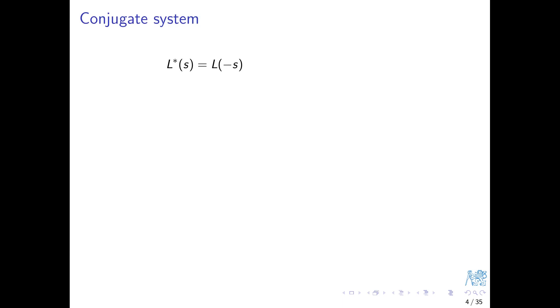One technical definition will be useful here. We define a conjugate transfer function as the original transfer function where, instead of s, we substitute minus s, and we label this conjugation using the symbol star. Some authors also use a tilde. The usefulness is that if we evaluate L-star on the imaginary axis, we immediately obtain the complex conjugate of the original transfer function evaluated at the same frequency. Verify this by yourself.